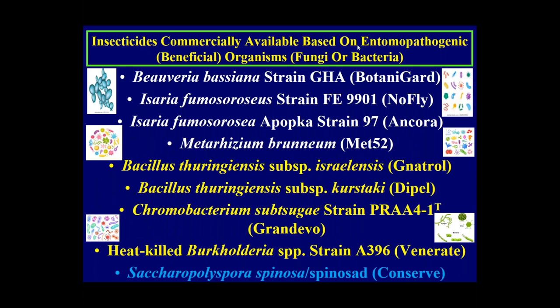Commercially available insecticides based on entomopathogenic fungi include BotaniGard, NoFly, Cora, and Met 52. Bacterial-based products include Natrol for fungus gnats, Dipel for caterpillars, and newer ones like Grandevo and Venerate. Conserve is more of a bacterial-type compound. Remember: bacteria must be consumed to be effective, whereas fungi can directly penetrate the cuticle or skin of the insect and cause an infection from within.